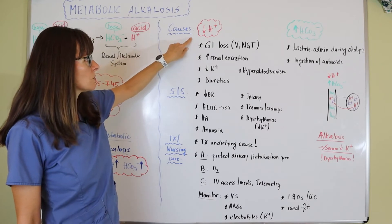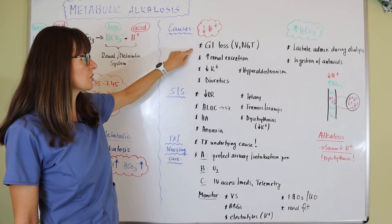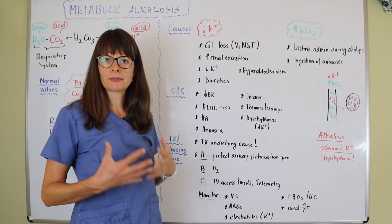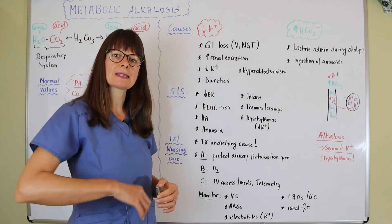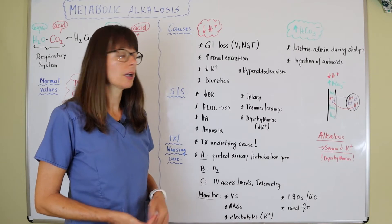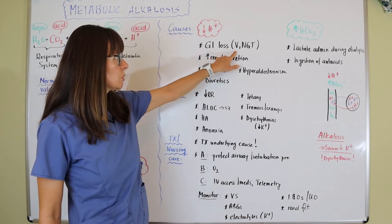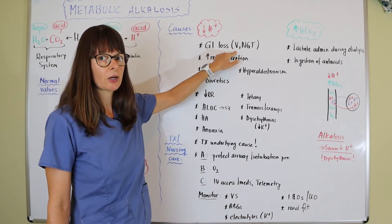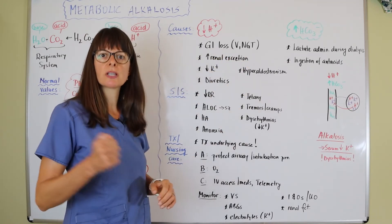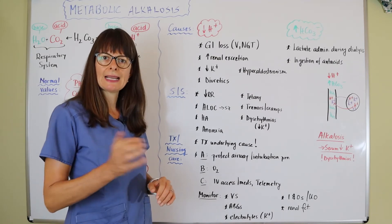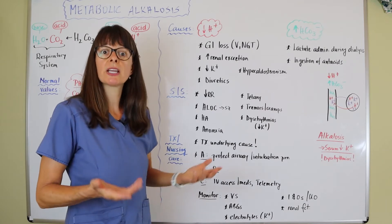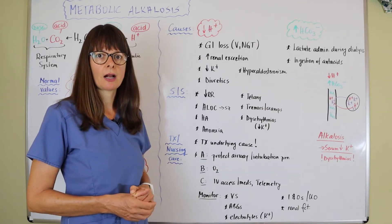We can lose hydrogen ion through the GI tract. Our stomach contains a lot of stomach acid, and if that stomach acid is excreted somehow, we lose that acid leaving us in an alkalotic state. This can be due to prolonged vomiting or if the patient has an NG tube with suctioning, that acid gets sucked out on a regular basis, potentially leaving the patient in an alkalotic state.